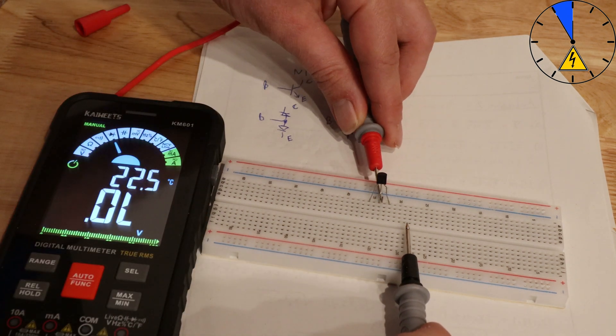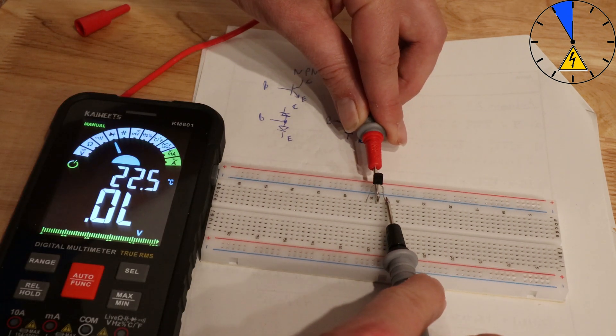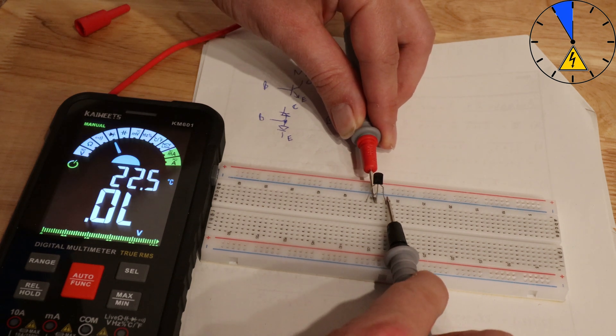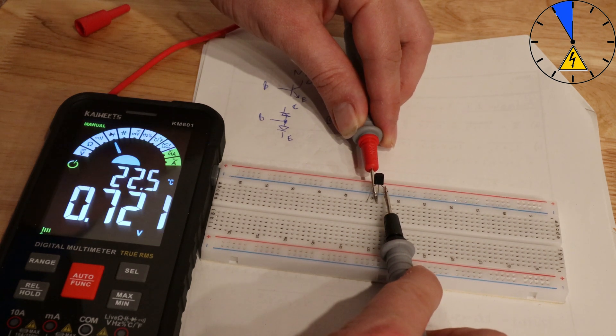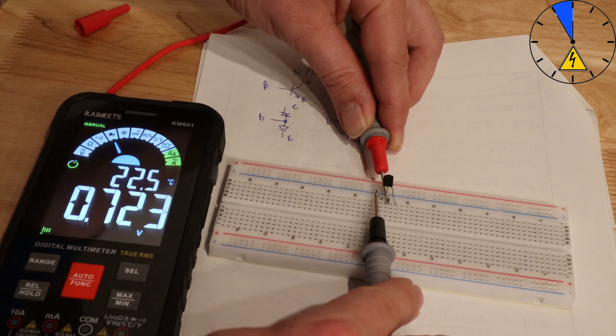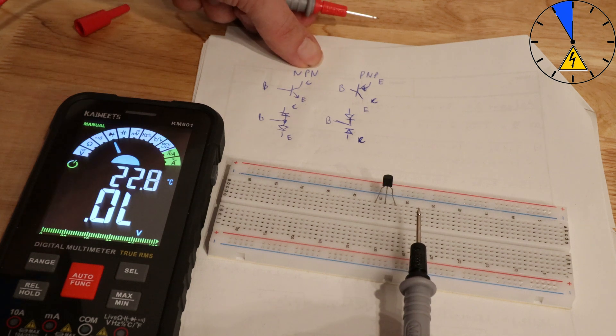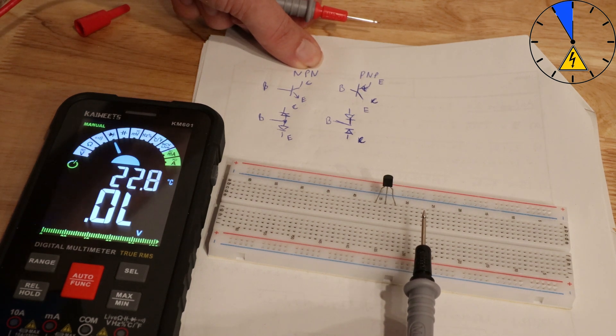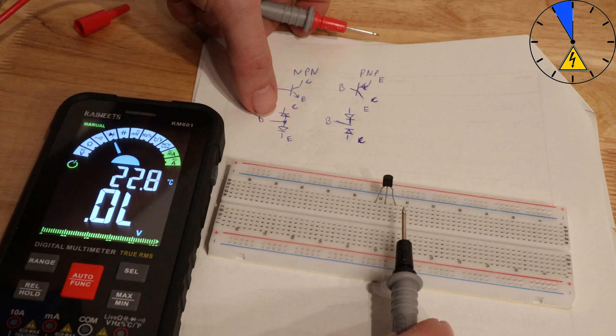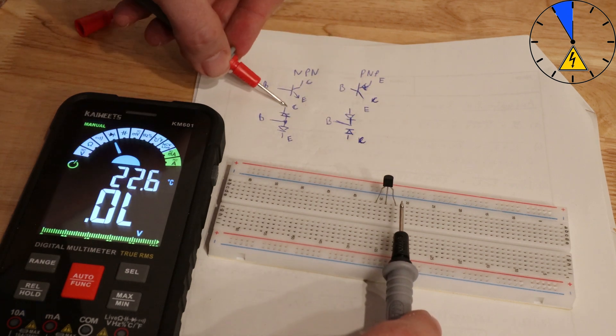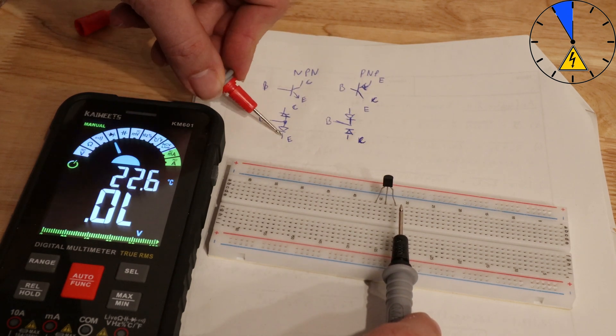And now this I will do here from base to this, and here from this. So now I know it is an NPN transistor, and the next thing is I know the base is here in the middle, and where is the collector and where is the emitter.